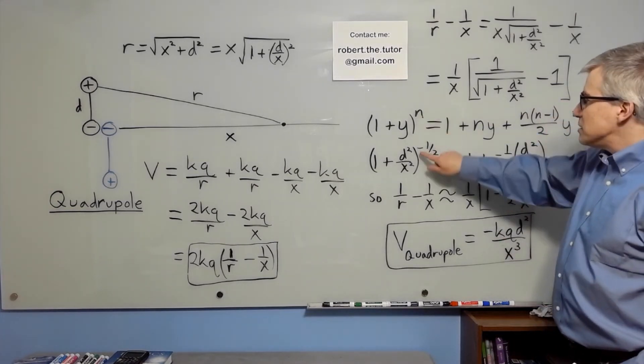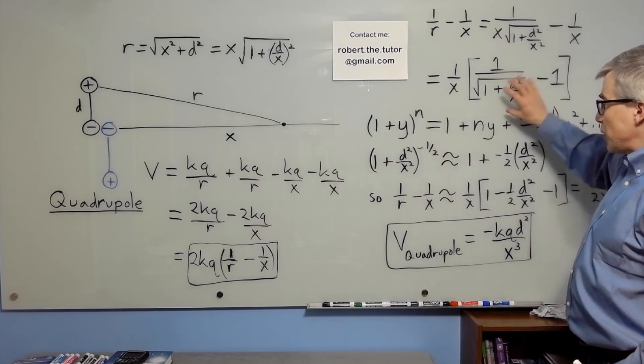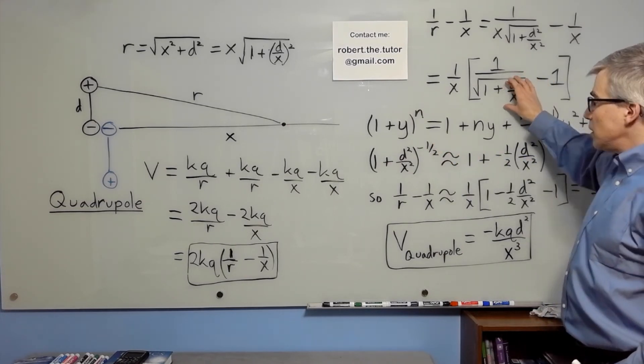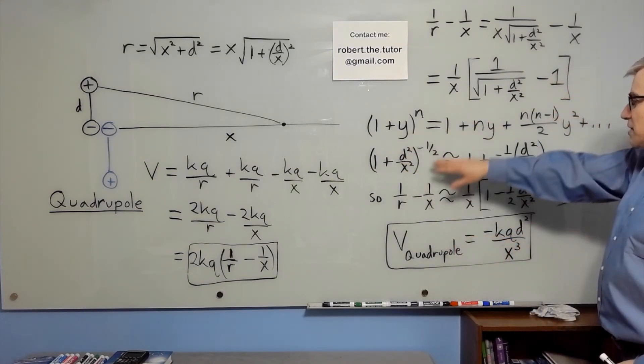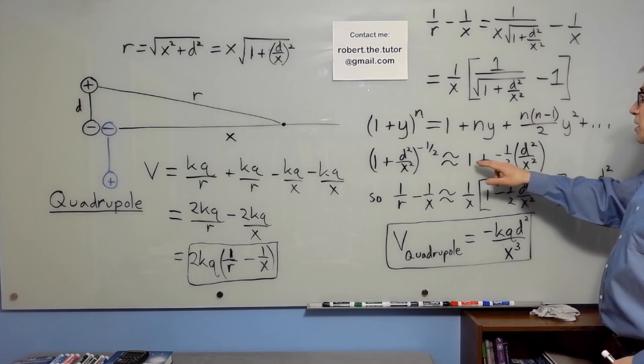If n is minus 1 half, because that's a fraction, a square root on the bottom, and d squared over x squared is y, then we get that this expression is approximately 1 minus 1 half d squared over x squared.